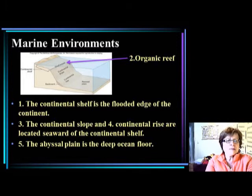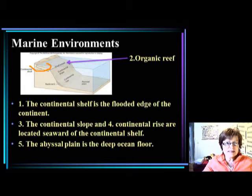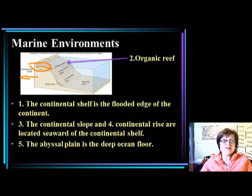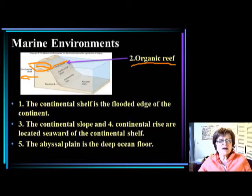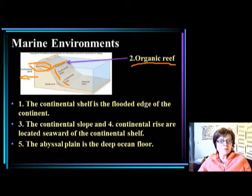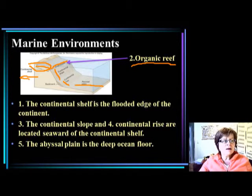The first part is the continental shelf, which basically belongs to the continent except this area is covered with water — usually very shallow water. Then you have the shelf break, which is basically the place where organic or coral reefs are located. The next ones are the continental slope and the continental rise, and then the last one is the abyssal plain — this is the deep water.